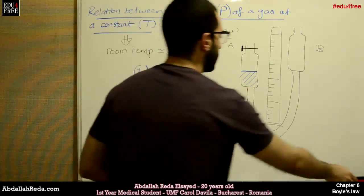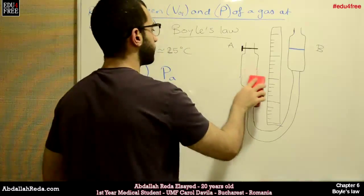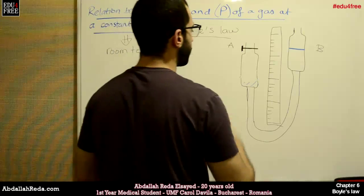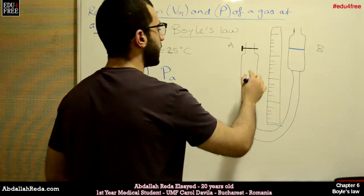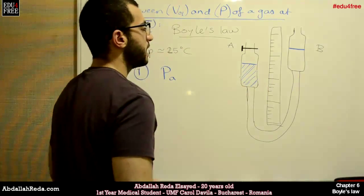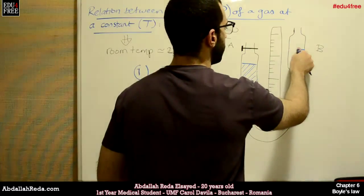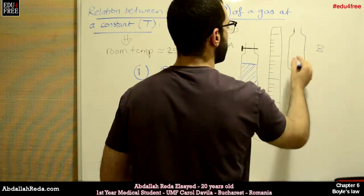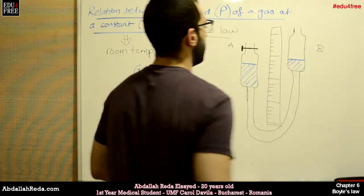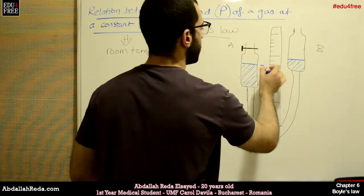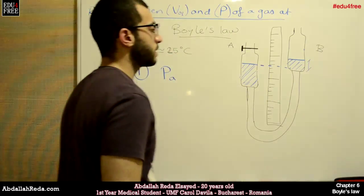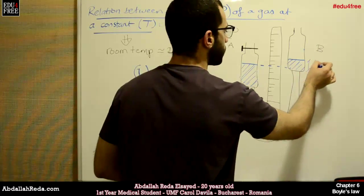And we're going to notice something. The level of mercury in tube A will actually increase. And the level of mercury in tube B will decrease like this. And we will have a height difference. This height difference, let's call it H1.